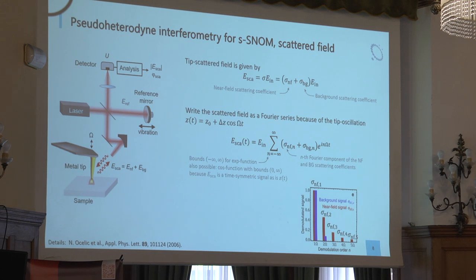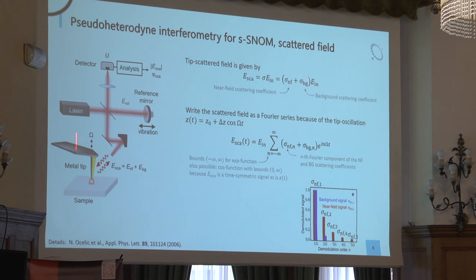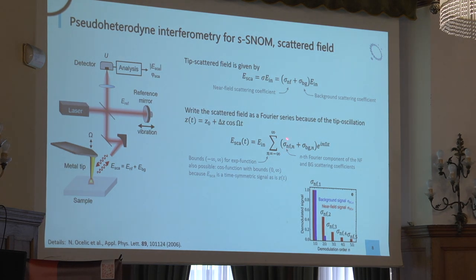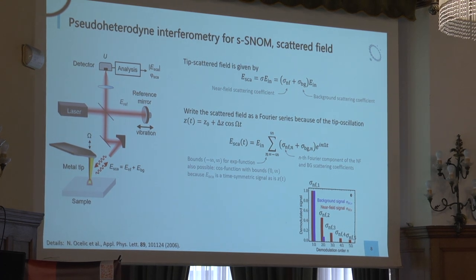This is our typical SNOM setup that you have seen before lunch. We have our laser, we illuminate our tip, and then we collect the scattered light from the tip. The scattered light contains the near-field scattering coefficient and the background scattering coefficient. Since we vibrate our tip vertically, it makes sense to express this as a Fourier series where we have Fourier coefficients appearing in that sum. In the literature there is some ambiguity about the bounds of this sum.